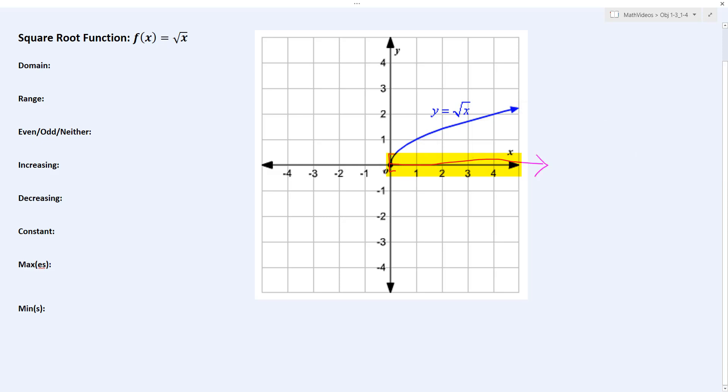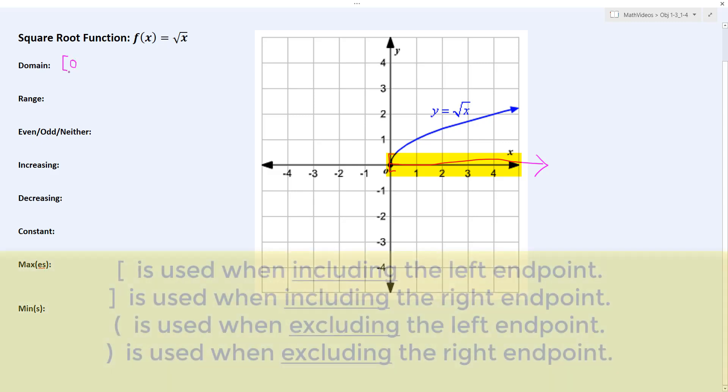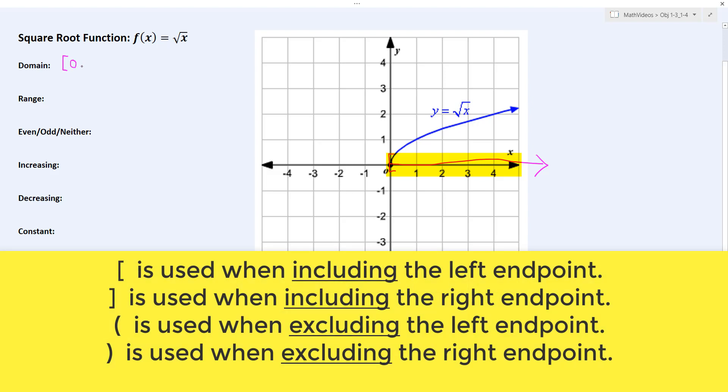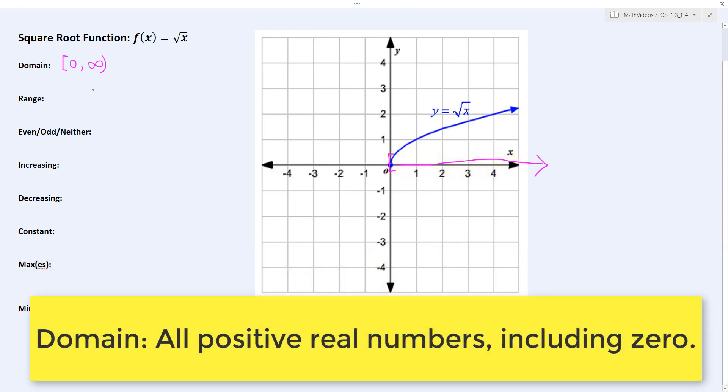The interval that we would use to represent that domain would start at 0 and include 0 itself. That's why we use a bracket to say we're including the 0, and then it goes to positive infinity. You never include positive infinity, so you would put a parenthesis. The domain goes from 0 to infinity, which is all the positive real numbers.